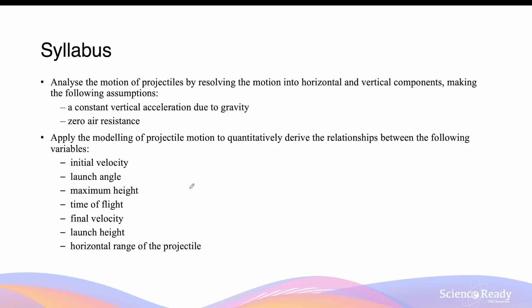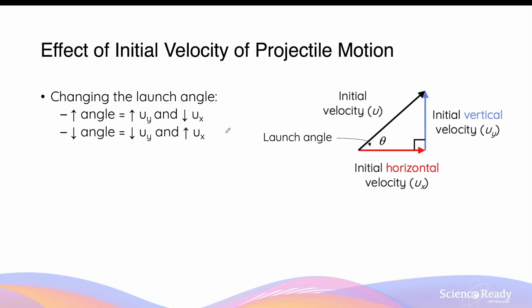This video is on the effect of initial velocity on projectile motion. By way of review, initial velocity can be analyzed in terms of its horizontal and vertical components. The horizontal and vertical components can be altered by changing the launch angle.